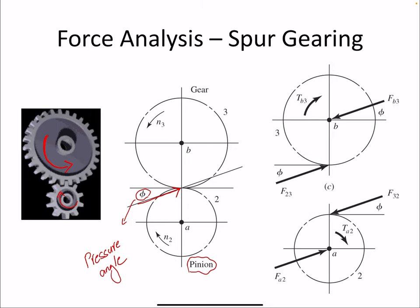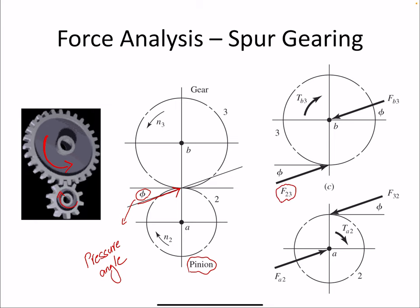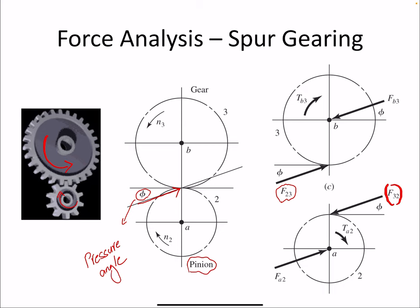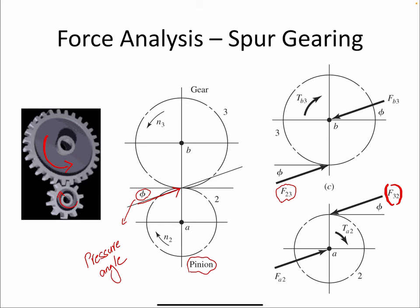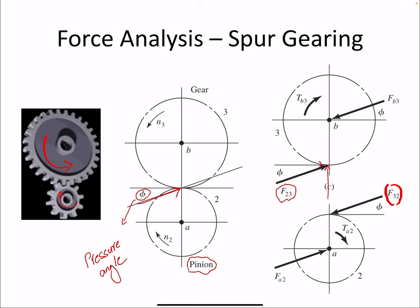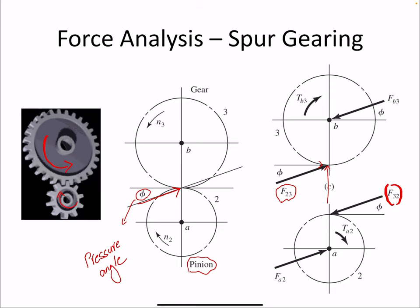This is the force that gear 2 is acting on gear 3. There would be a reaction force — gear 3 acting on gear 2 — and these two forces are identical in magnitude and opposite in direction. Therefore their tangential component and radial component would also be the same.